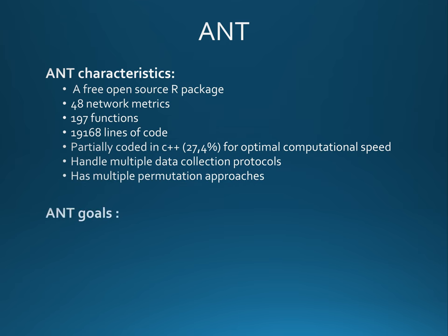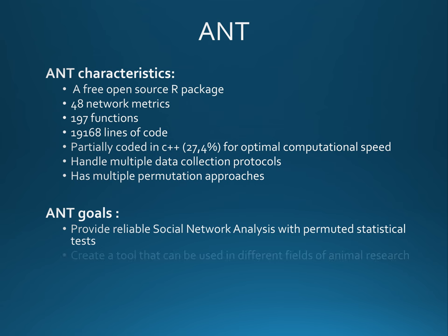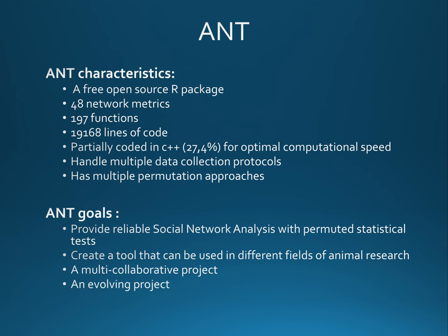multiple permutation approaches, and the goal of ANT is to provide reliable social network analysis with permuted statistical tests. It's also to create a tool that can be used in different fields of animal research. It's a multi-collaborative project and we hope it will evolve with time. If you're interested in participating in the development of ANT, you are welcome.